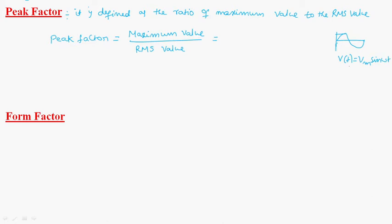In this, the maximum value is given by Vm. And the RMS value is Vm by root 2.